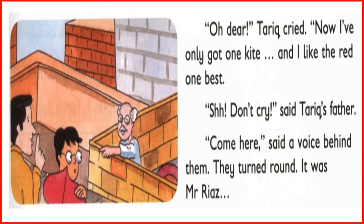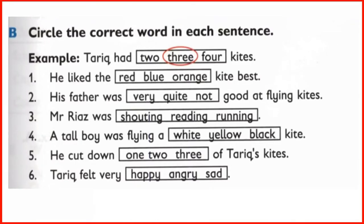The first part of the story has ended here. Now the question: circle the correct word in each sentence. Example — Tariq had 2, 3, or 4 kites? Tariq had 3 kites. He liked the red, blue, or orange kite best? He liked the red kite best.